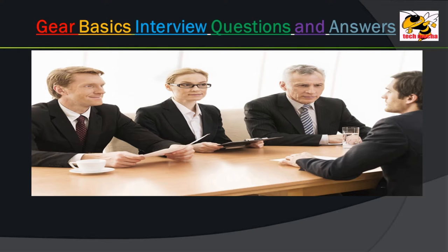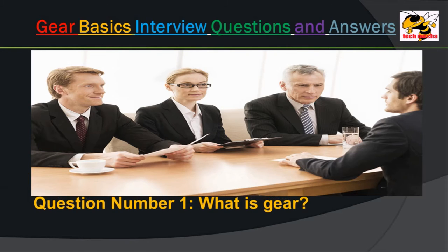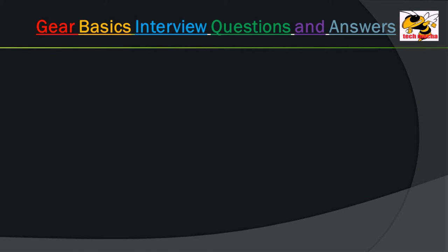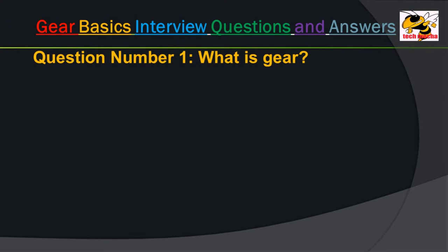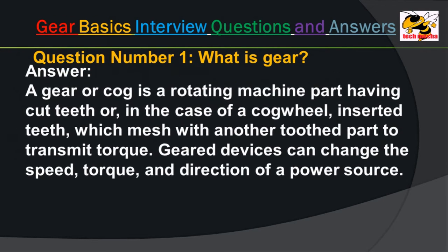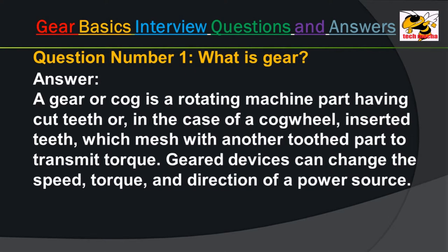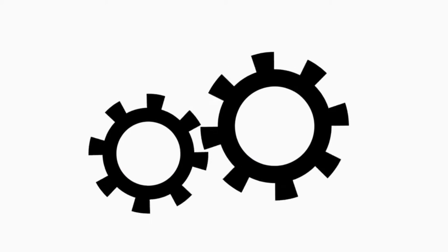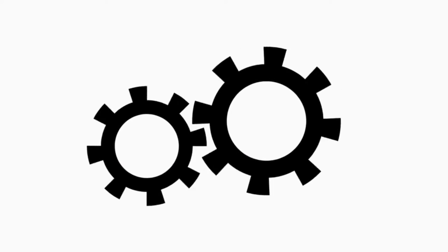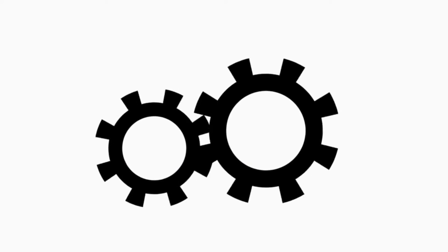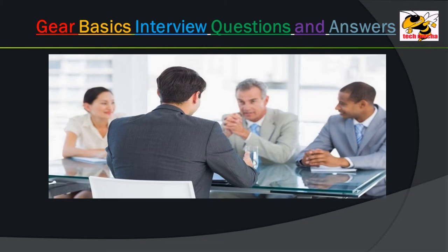Question number 1: What is a gear? Answer: A gear or cog is a rotating machine part having cut teeth, or in the case of a cog wheel, inserted teeth, which mesh with another toothed part to transmit torque. Geared devices can change the speed, torque, and direction of a power source.